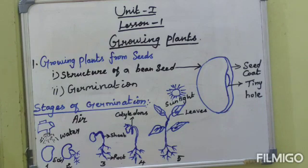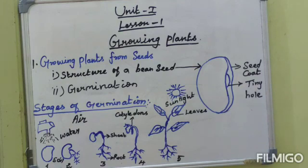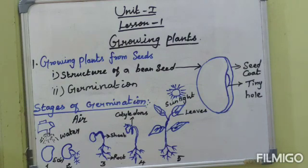What are the conditions necessary for germination? The following are the conditions necessary for germination. A seed needs air, water and sunlight to germinate. If a seed does not receive any one of these three, it will not germinate.